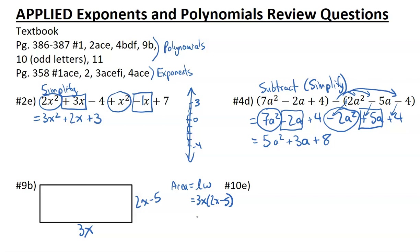Now it says expand the expression. If we're expanding, we're going to use the distributive property. 3x times 2x: 3 times 2 gives you 6, x times x gives you x squared. Now we're doing 3x times negative 5, so 3 times 5 is 15 and we have the x because there was no x with the 5 but there was with the 3. So that expands to 6x squared minus 15x.